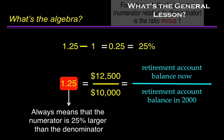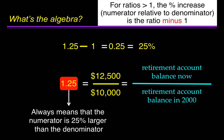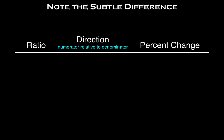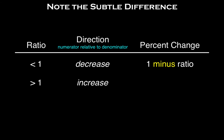What's the general lesson? For ratios greater than 1, the percentage increase — numerator relative to the denominator — is the ratio minus 1. Note the subtle difference. Here's a table: if the ratio is less than 1, the direction is a decreased numerator relative to the denominator, and the percentage change is 1 minus the ratio. If the ratio is greater than 1, the direction is an increased numerator, and the percentage change is the ratio minus 1.